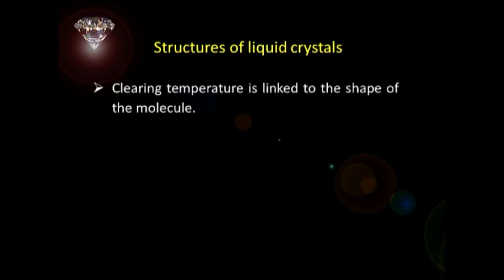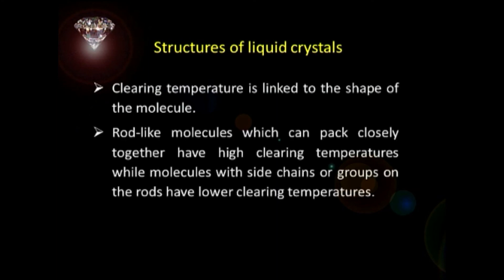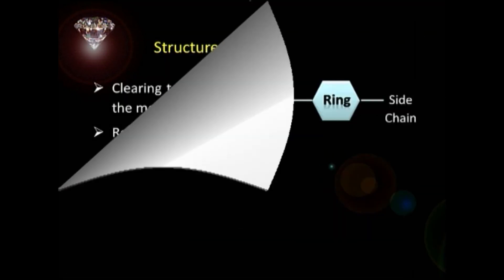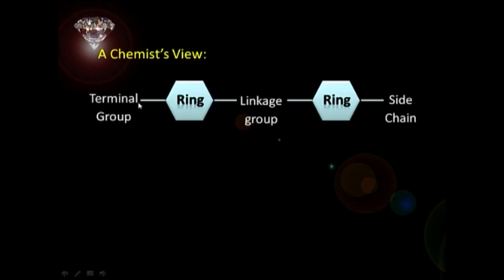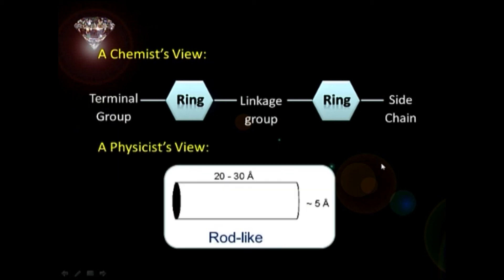These cores have attached with them one or two carbon chains. Clearing temperature is linked to the shape of these molecules — rod-like molecules which can pack closely together have high clearing temperatures, while molecules with side chains or groups on the rods have lower clearing temperatures. You can see here the typical structure of a liquid crystalline material: a ring system with a short linkage — a flat, rigid core — a terminal group on one end, and a long side chain on the other. This is how chemists look at a liquid crystalline molecule, but the physicist's view is different — for them it is just like a rod, because if you rotate the molecule, what you see is a rod-like figure.